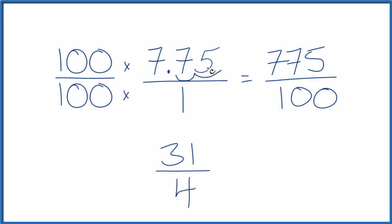So the decimal 7.75 equals the fraction 31 over 4, 31 fourths. This is an improper fraction because 31 is larger than 4. Our numerator is larger than our denominator.